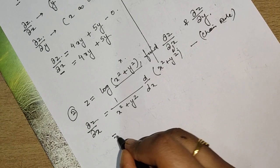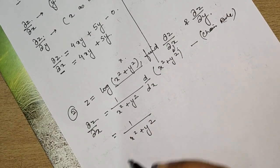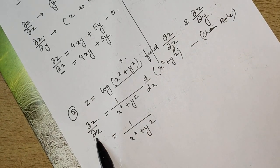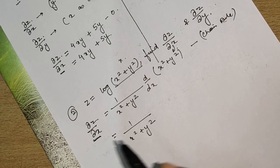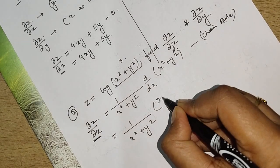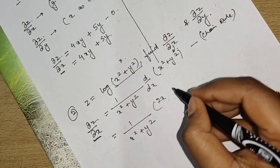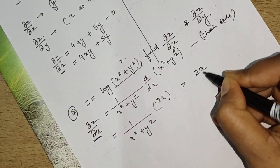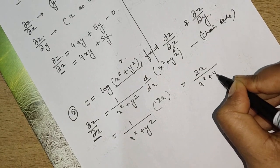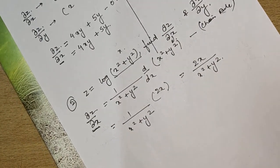For x² + y²: assuming y is constant because we are differentiating with respect to x, the derivative of x² is 2x and y² gives 0. So the answer for ∂z/∂x is 2x/(x² + y²).